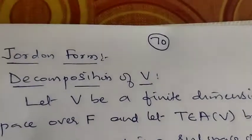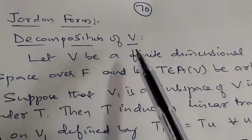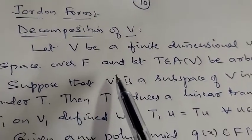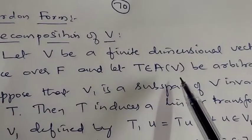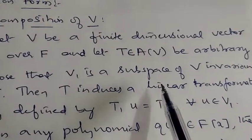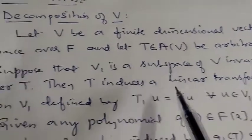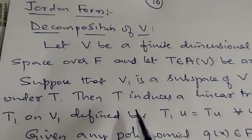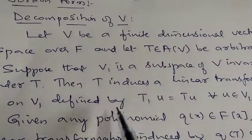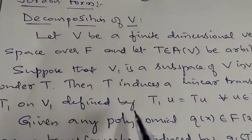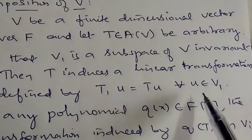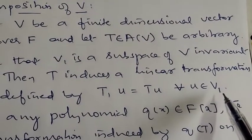Let V be a finite dimensional vector space over a field F and let T belong to A(V). Suppose that V1 is a subspace of V invariant under the transformation T. Then T induces a linear transformation T1 on V1 defined by T1(U) = T(U) for every U in V1.